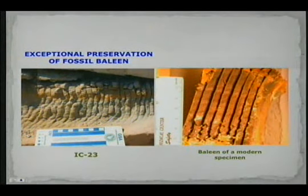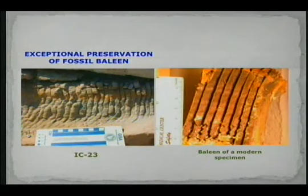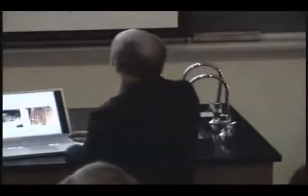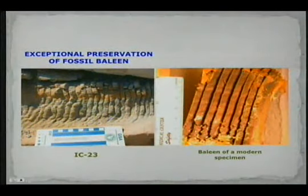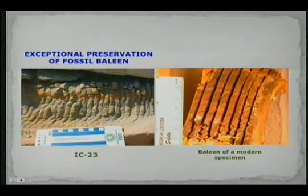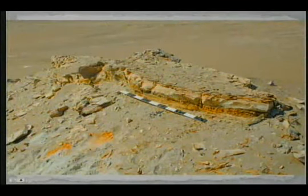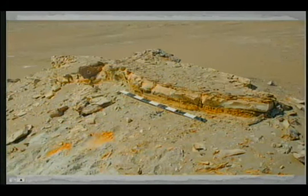Baleen is fossilized in between these stacks of sediment. Baleen is about 3 to 5 millimeters thick, but when it fossilizes it becomes a fraction of a millimeter. Here is modern baleen — sediment got in between and fossilized it, petrified it. This is another specimen — the skull, the scapula, and baleen in situ.